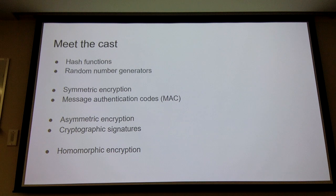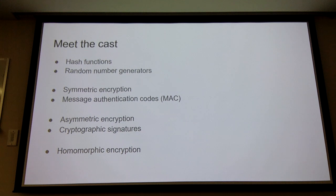You've got hash functions. You've got random number generators. Those are the things you probably know about. You've probably used a hash function at some point that just takes an input of some unbounded size and turns it into a digest. There are also two different kinds of encryption: symmetric and asymmetric. There's also something called a message authentication code, MAC, which is very important but gets a lot less press.